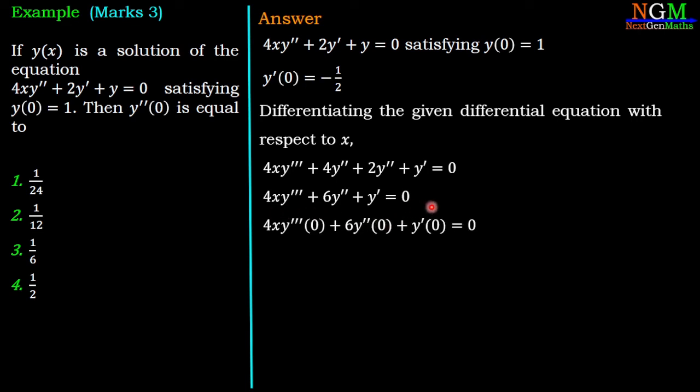Now if we evaluate this differential equation at 0, then we have 4x·y'''(0) + 6y''(0) + y'(0) = 0. If we put x = 0, then the first term will be 0. Then in the second term, y''(0). Then y'(0) is the value we calculated, which is -1/2.